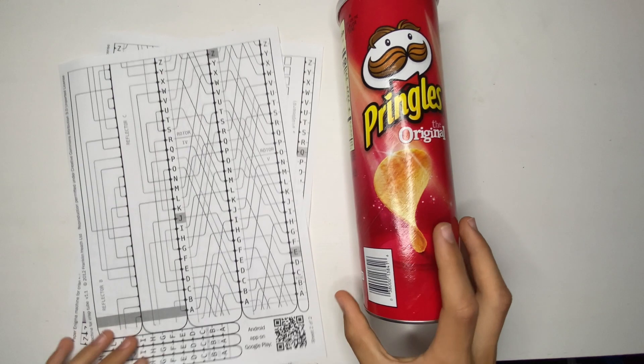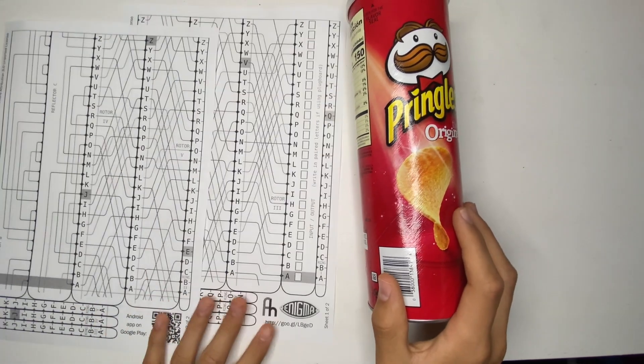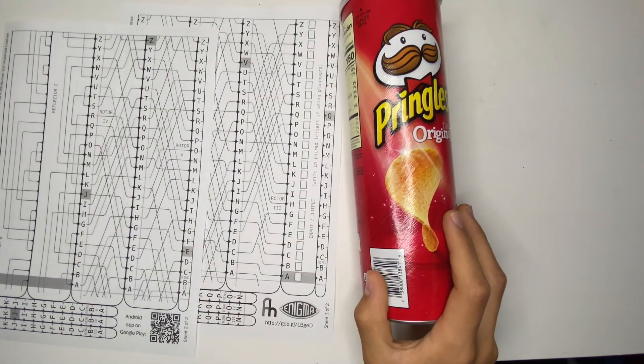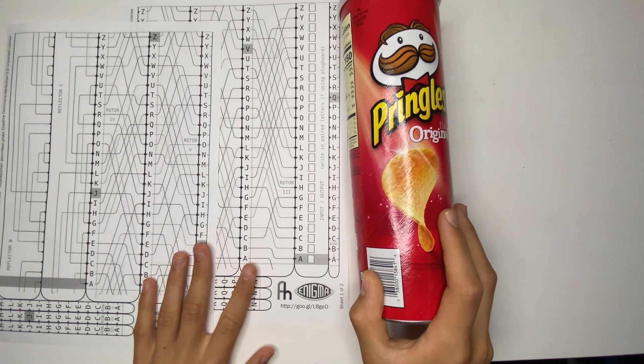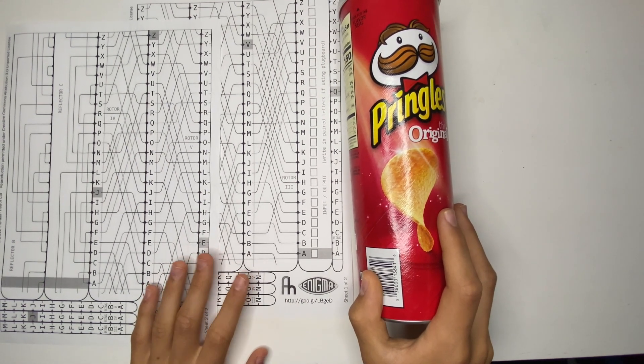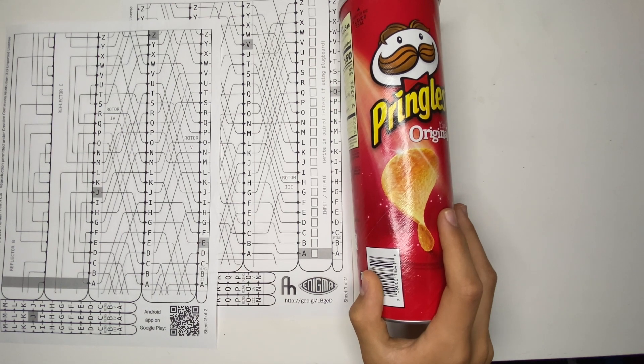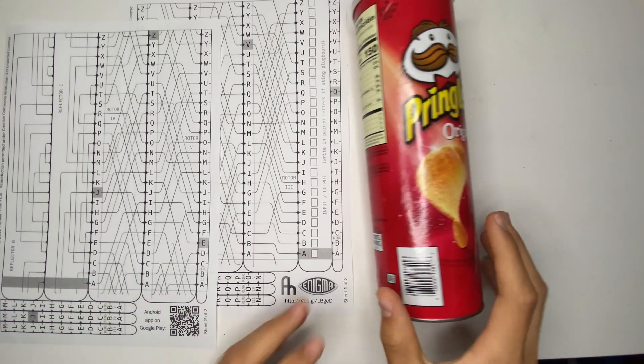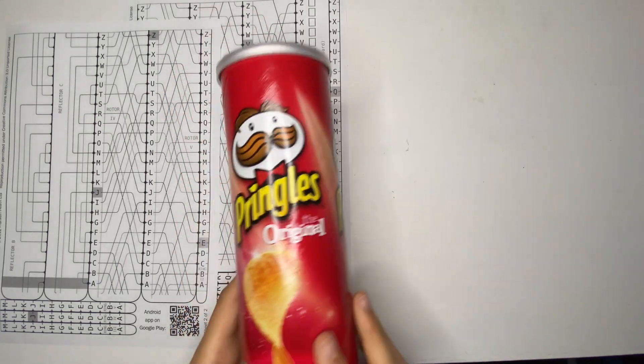Alright, so I've got here a Pringles tube and these two sheets which are going to make our Enigma machine. I'll leave a link to these in the description below and be sure if you're printing them out to print them at 100% even if it doesn't all fit on the paper, because otherwise it won't completely go around the can.